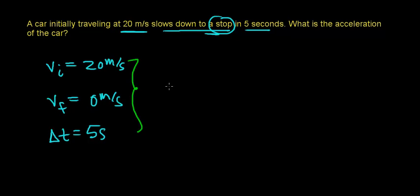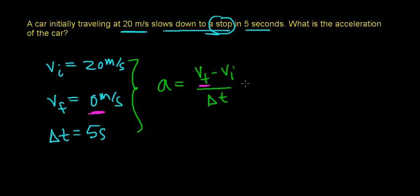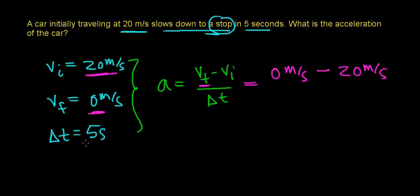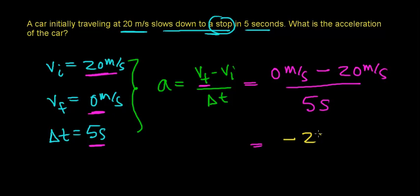Using the definition of acceleration, the change in velocity per change in time is going to be a negative number. Our final velocity is 0 meters per second, minus our initial velocity of 20 meters per second, divided by 5 seconds. So 0 minus 20 works out to be negative 20 meters per second, divided by 5 seconds.